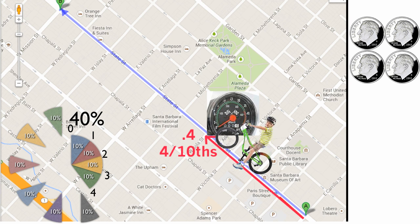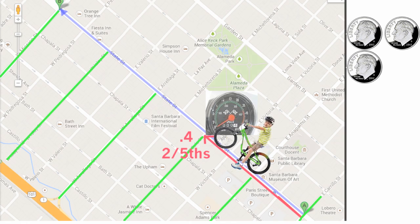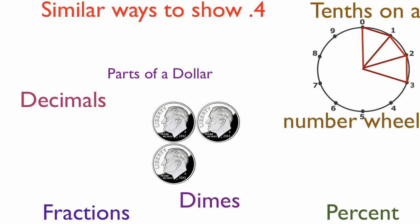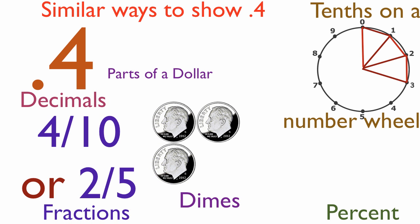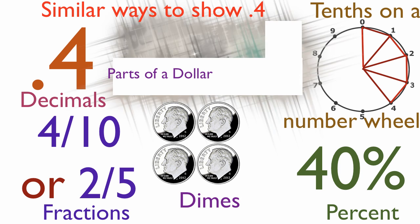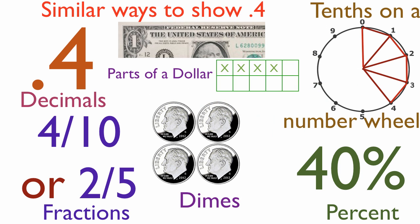Chris goes forward another block and picks up a fourth dime. He has now gone two of the five two-block chunks marked by green lines. He has now gone 0.4, or four-tenths, or two-fifths, or 40% of a mile, and to four on the number wheel, and has four dimes, or four-tenths, or 40% of a dollar.